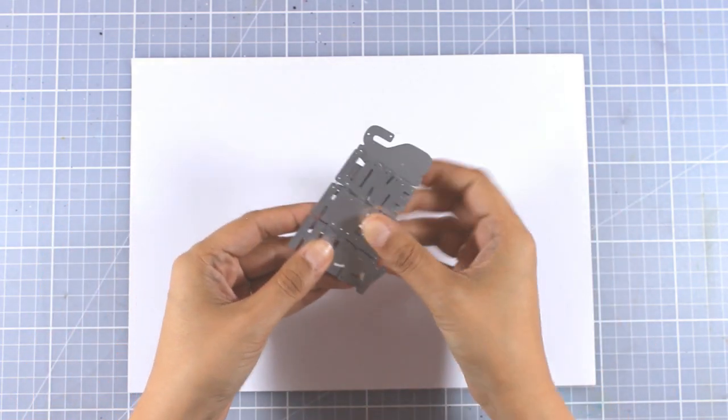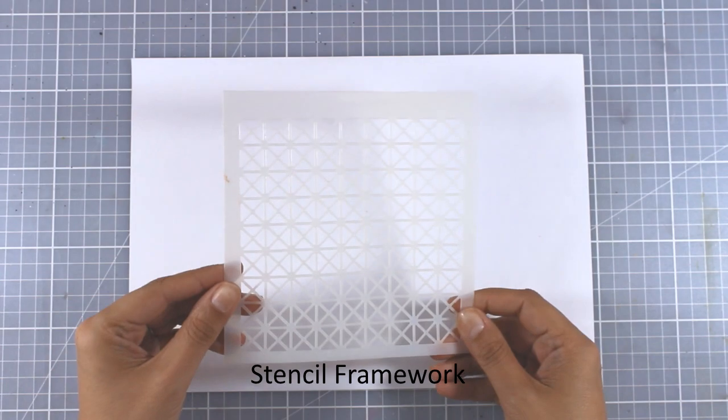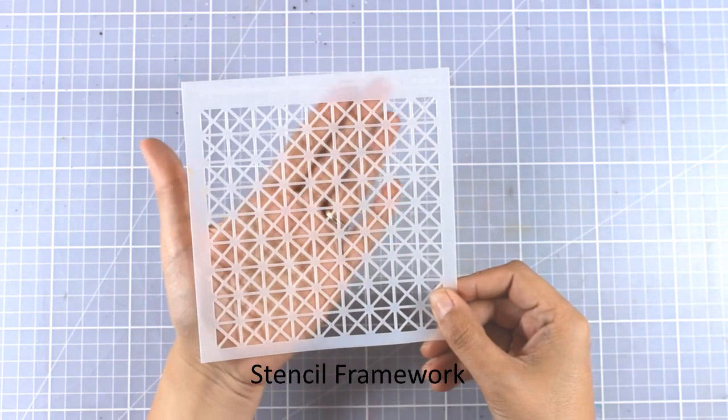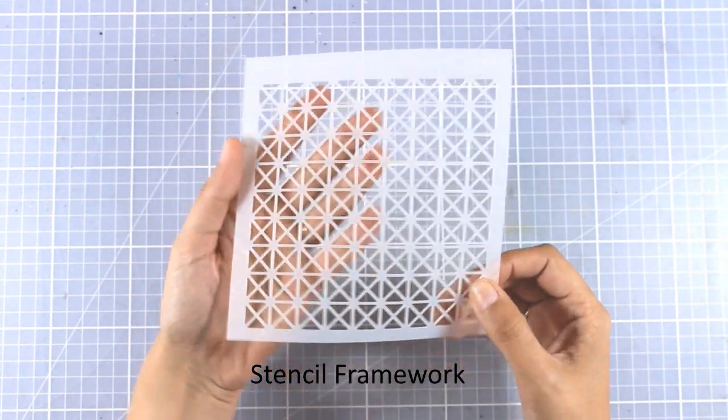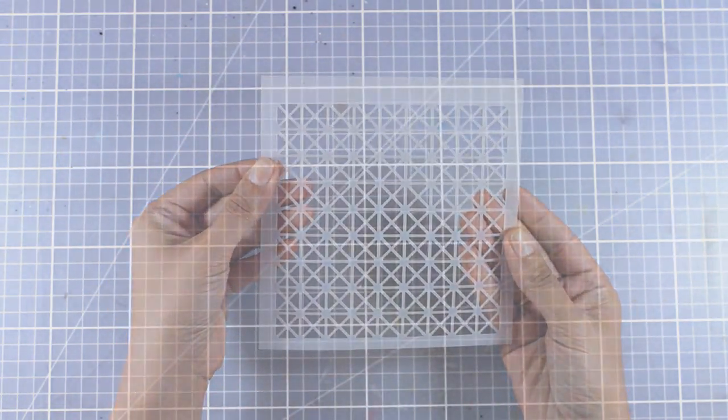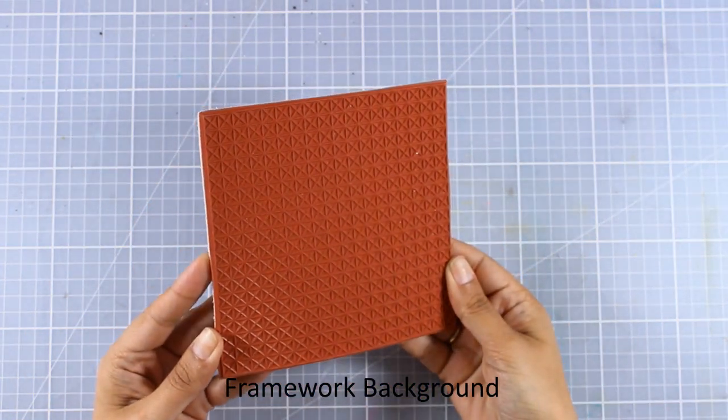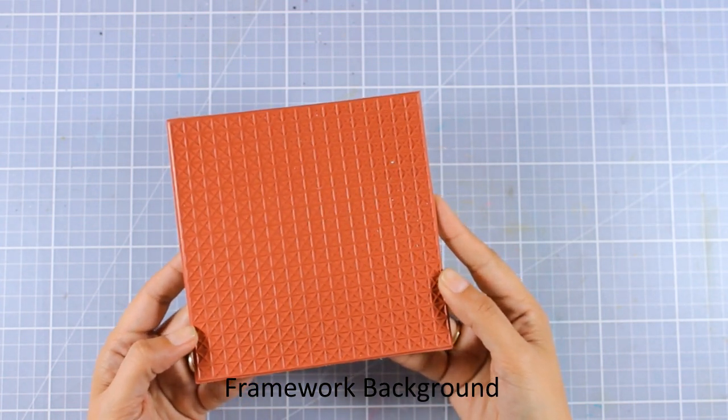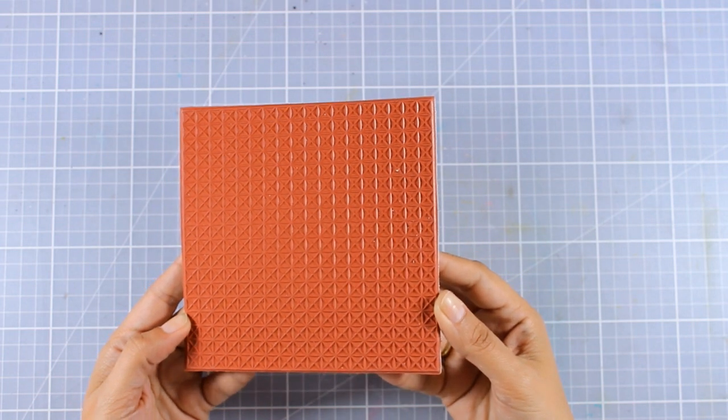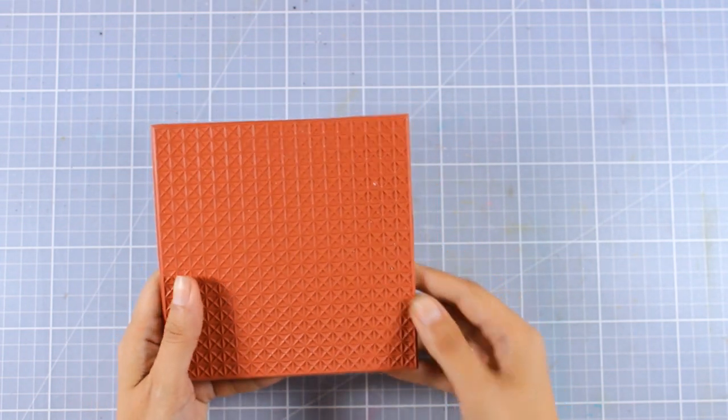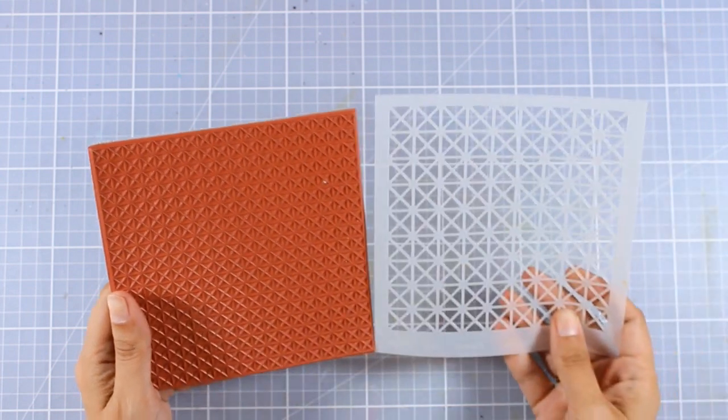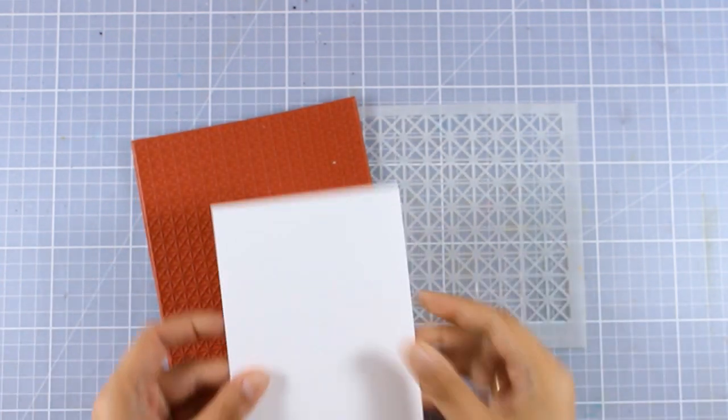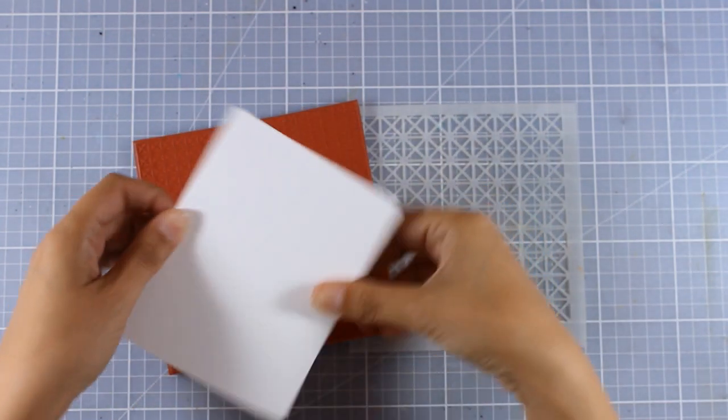Every month we also get a new stencil, so this is the stencil for June. It's called Stencil Framework and gives you this beautiful geometric design for creating your backgrounds. Finally, we get the rubber stamp for this month, which gives you the same design as the stencil. It's called the Framework Background, exactly the same design as the stencil but just a little bit smaller. Since this is a background stamp, it's quite big, so you can cover vertically or horizontally a standard 4.25 by 5.5 inch card.